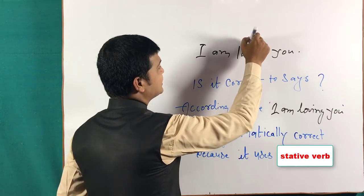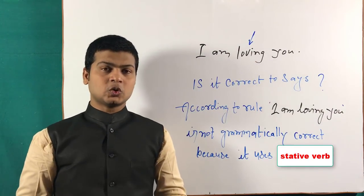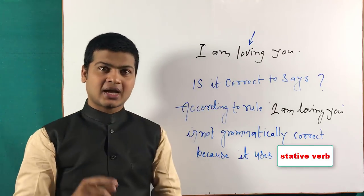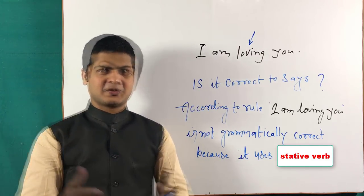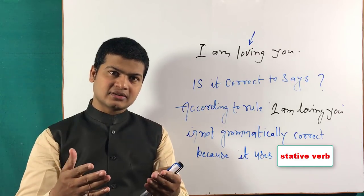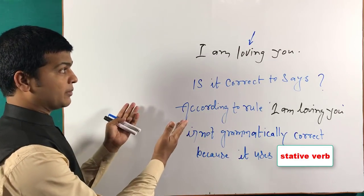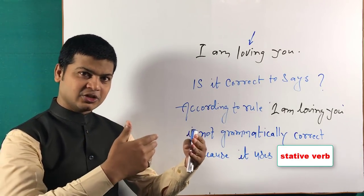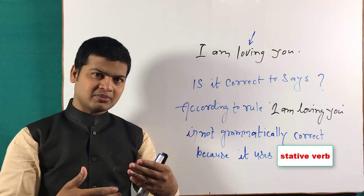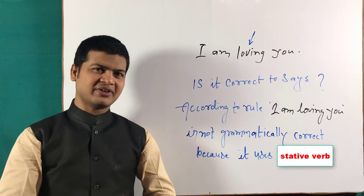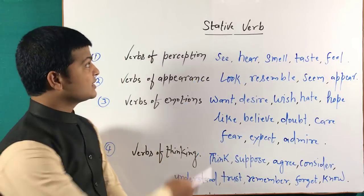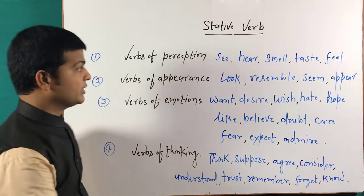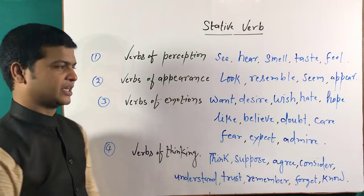Kyunki yahan ek stative verb ka use hua hai. Ye jo 'love' hai, ye ek stative verb hai. To ye stative verb kya hota hai? Aur ye kaise galat hai? Aiye iske baare mein detail se jaante hain. Friends, aapko jankar hairat hogi ki bahut aise words hain jismein aap -ing form nahi add kar sakte. Uske kuch conditions hain jo aaj ke is video mein hum dekhenge.